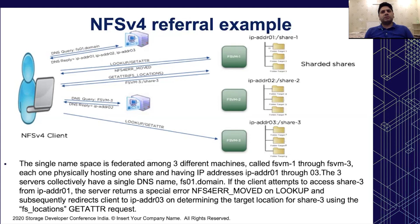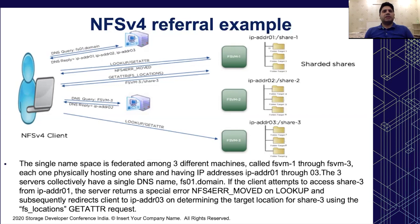Each FS node knows about all exports and their physical location, so it can correctly reply to the readdir RPC on the pseudo FS root. When the client tries to step into an export not local to FS VM 1 — for example, export 3 — it issues a lookup RPC and the NFS server on FS VM 1 returns the error EMOTE. This special error signifies the directory is not physically hosted on this machine. The client then sends a GETATTR RPC asking for the referral location (FS locations); the server returns the host's DNS name (FS VM 3) and the path of the target directory. The node name is resolved to an IP address via DNS, and the client sub-mounts export 3 in its namespace; all subsequent RPCs for export 3 go directly to FS VM 3.